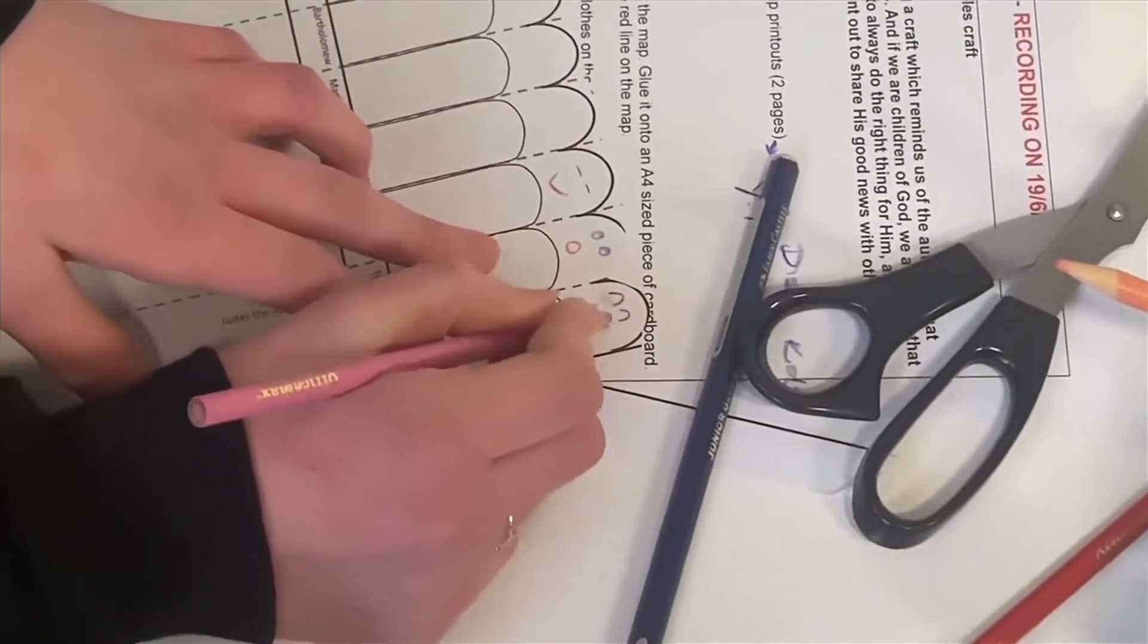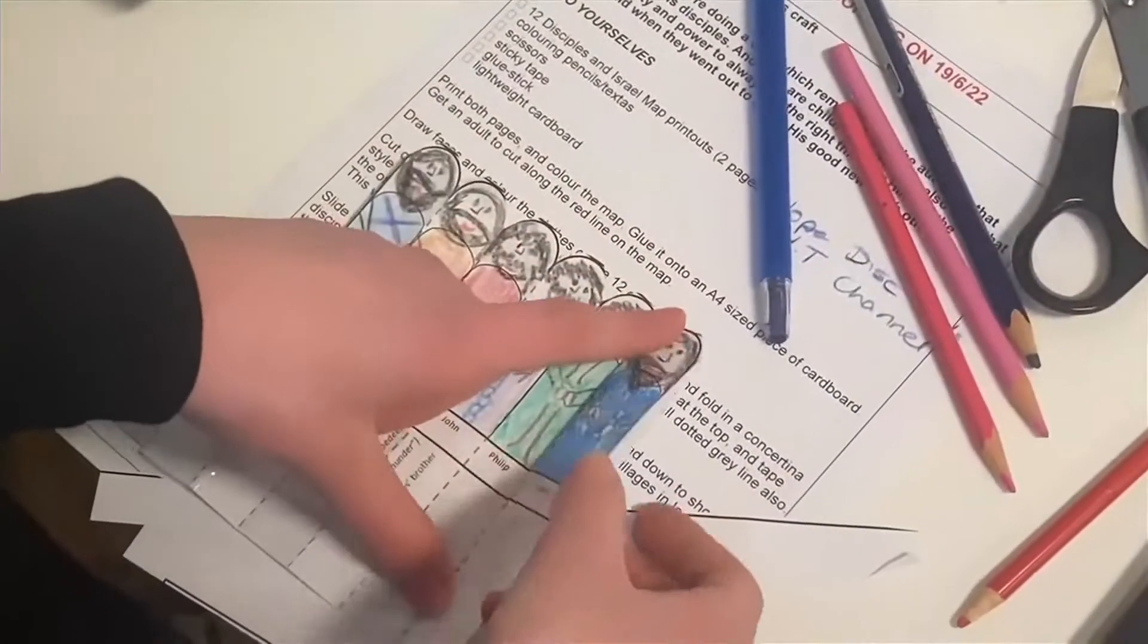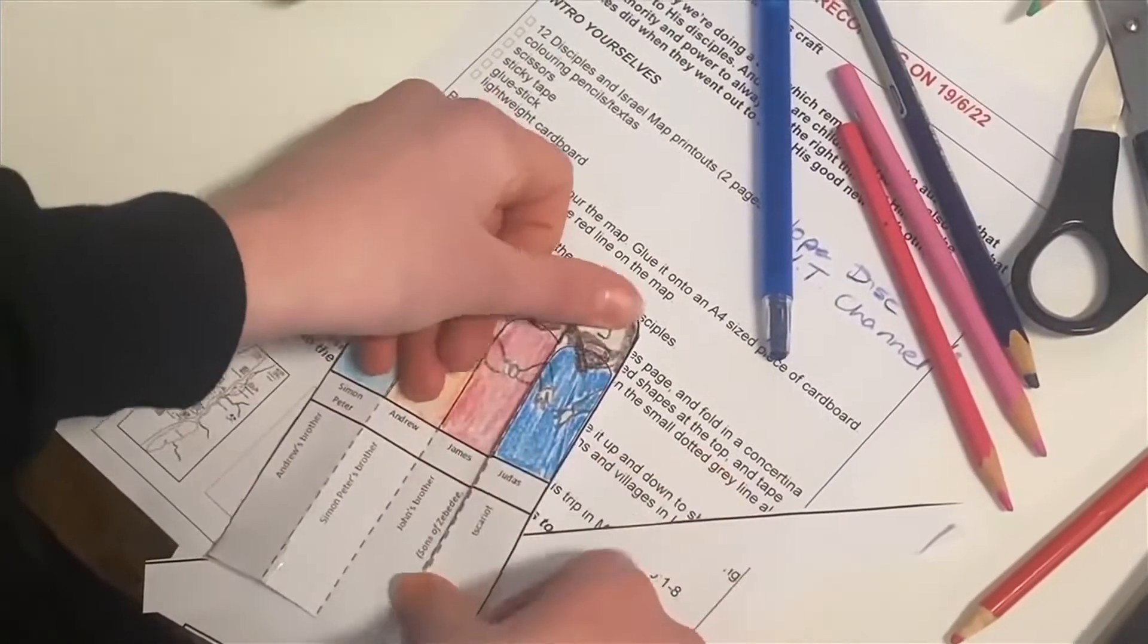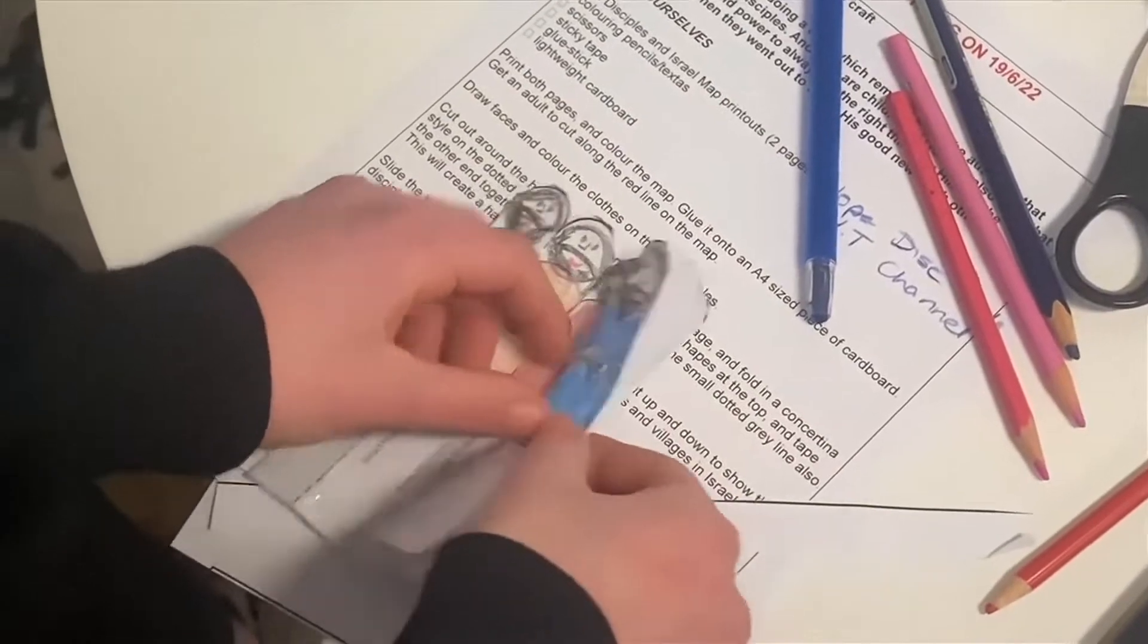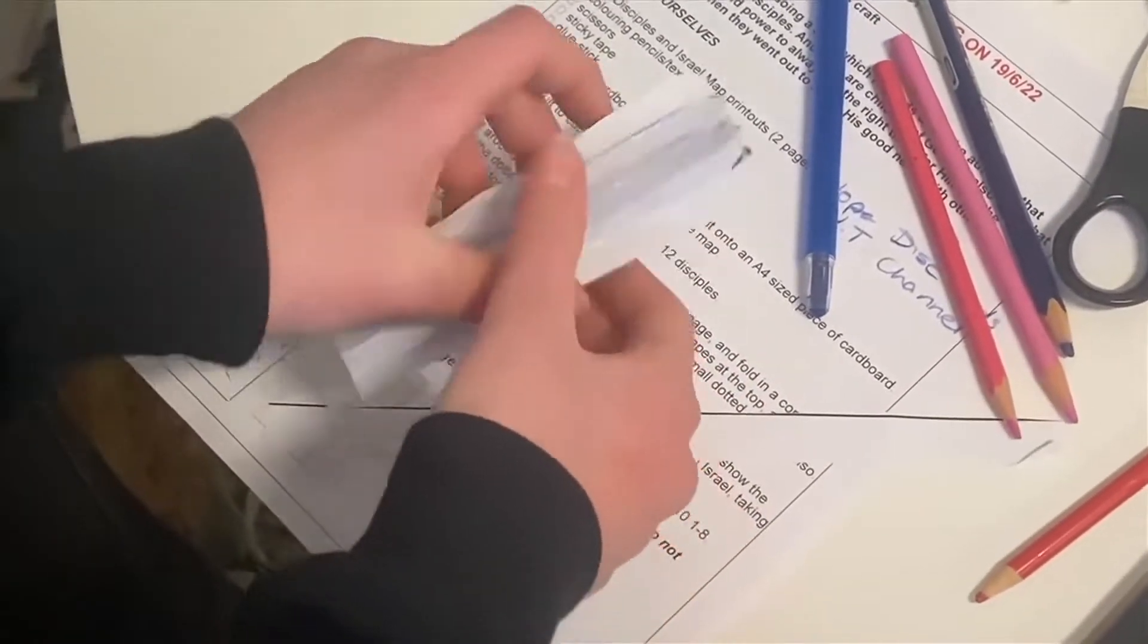Cut out around the curved shapes at the top and tape the other ends together to create a fan effect. Fold along the small dotted gray line.